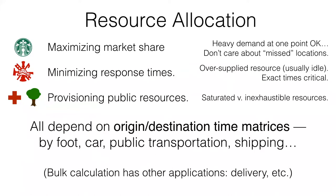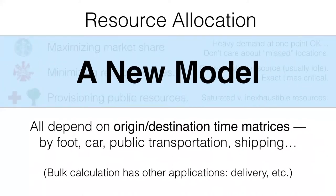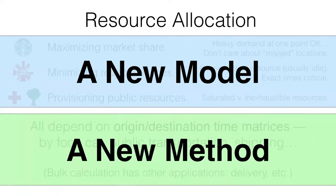All of these problems depend on accurate and large origin-destination time matrices on different networks — by foot, public transportation, car, shipping, and so forth. Being able to calculate these matrices at large scale has obvious applications. What we want to talk about in this talk is a new strategy for modeling resource allocation and new methods for calculating these matrices at large scale.